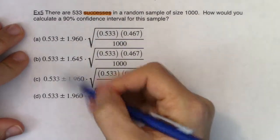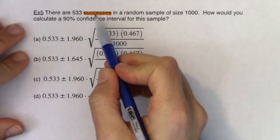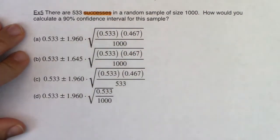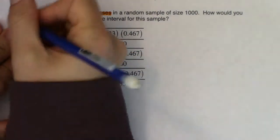But really with the combination of the word successes and this decimal between 0 and 1, we're in proportion land.